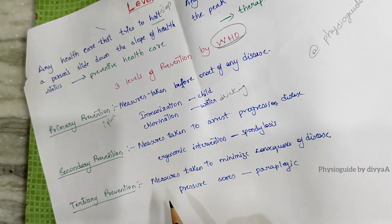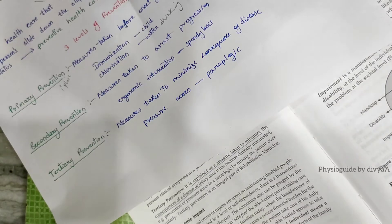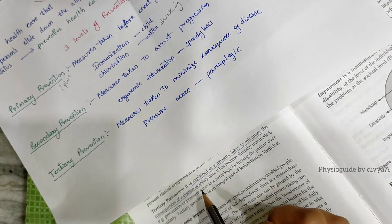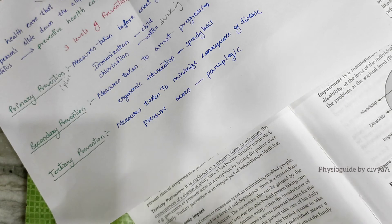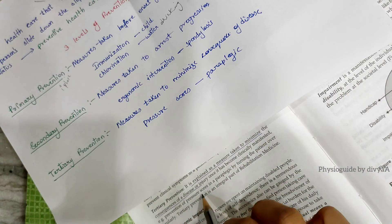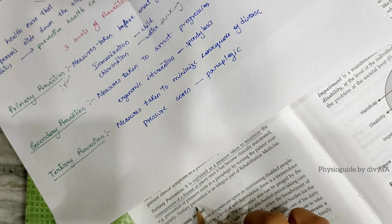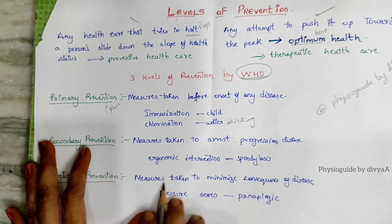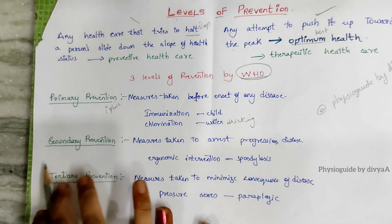Tertiary prevention involves measures taken to minimize the consequences of disease — for example, prevention of pressure sores in a paraplegic patient by turning the patient over regularly. Once the condition has become clinically manifested, tertiary prevention is an integral part of rehabilitation medicine. Pressure sores are a very important concern in paraplegic patients.